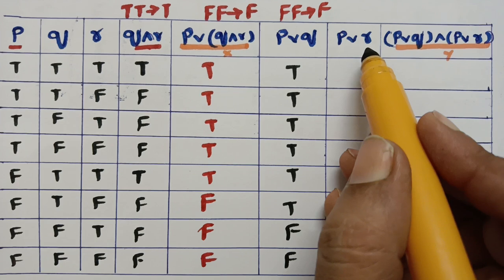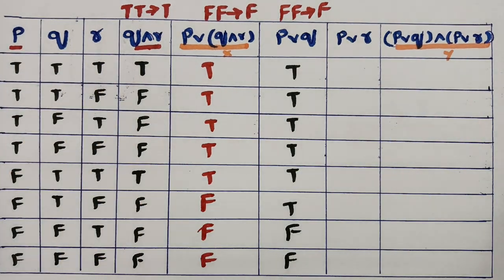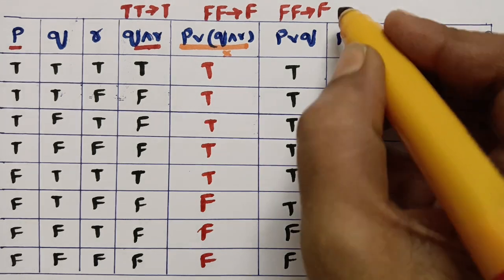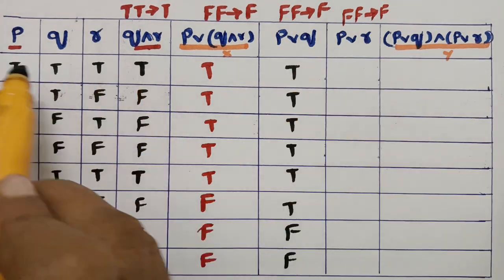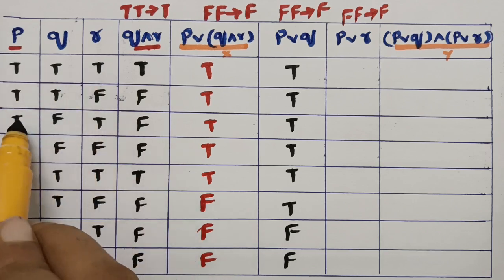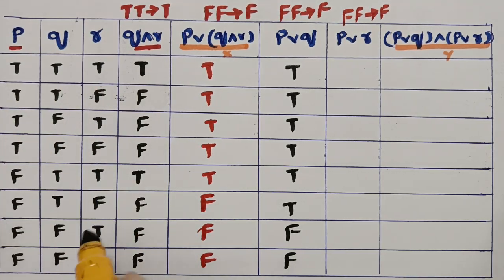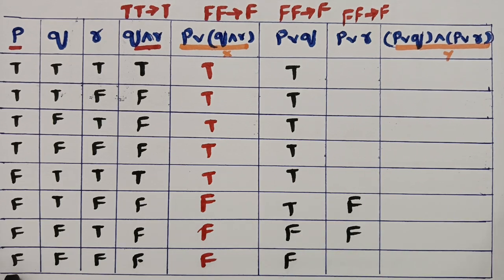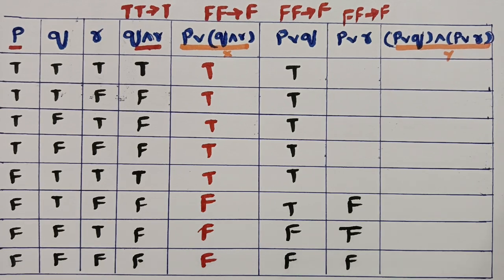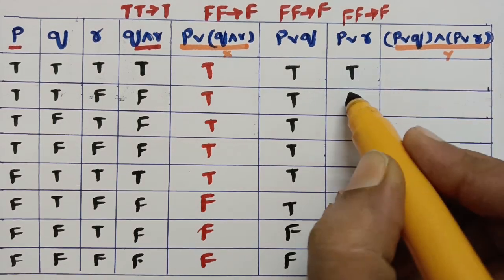Now compute p or r. Again using disjunction: if both are false, write false; otherwise write true. Comparing p and r row by row: there are two rows with false-false, which give false; one row has false and true which gives true; the remaining rows are all true.